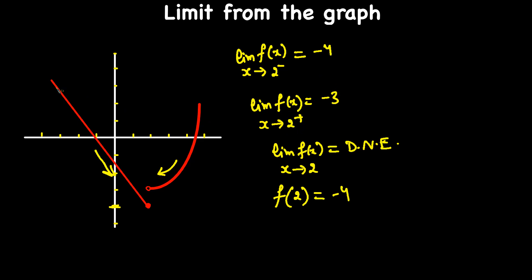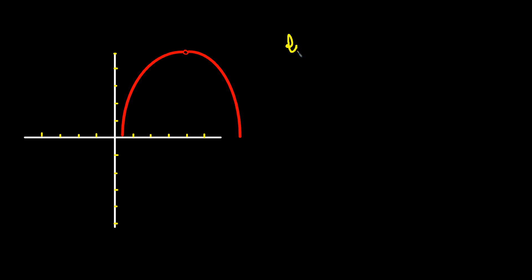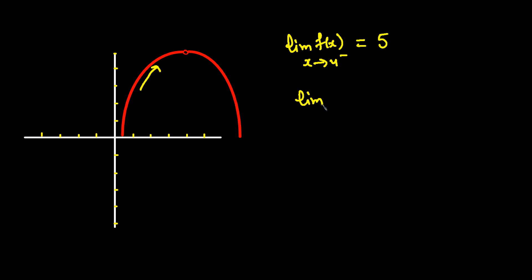If those two numbers are equal, then whatever that number is, it is the limit of the function at that value. Now for the next example — the point is at x=4. The limit of f of x as x approaches 4 from the left: going 1, 2, 3, 4 takes us to a y-value of positive 5.